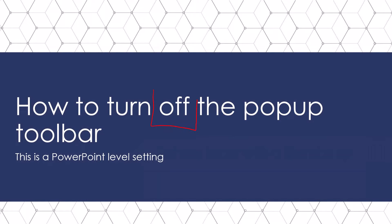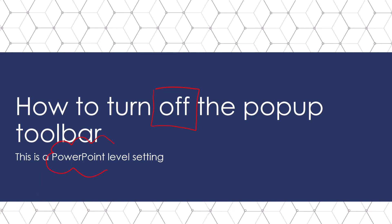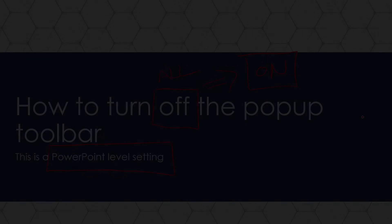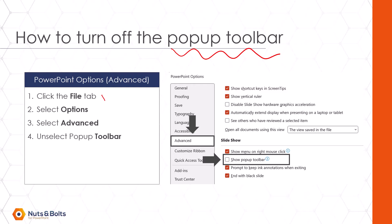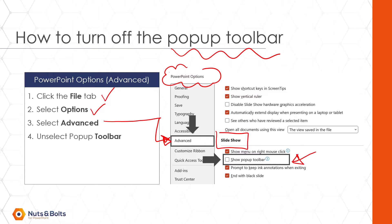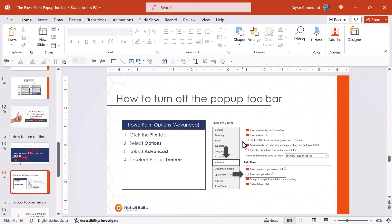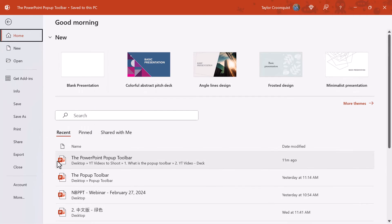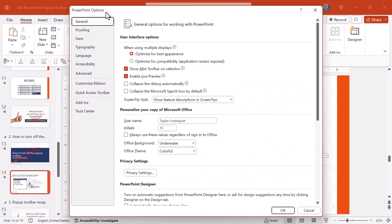Now let's talk about how to turn off the pop-up toolbar. If this band of commands in the lower left-hand corner is driving you nuts, you can turn it off — but remember, this is a PowerPoint-level setting. Once you've turned it off, it'll be off for all of your presentations until you turn it back on again. To turn it off, go to the File tab, select Options to get to the PowerPoint Options dialog, find the Advanced grouping, scroll to the slideshow group, and turn the pop-up toolbar on or off.